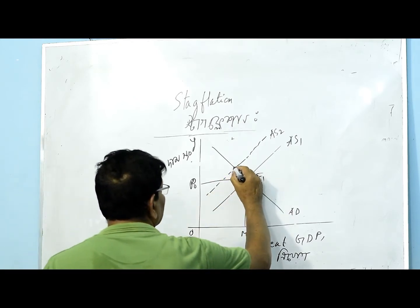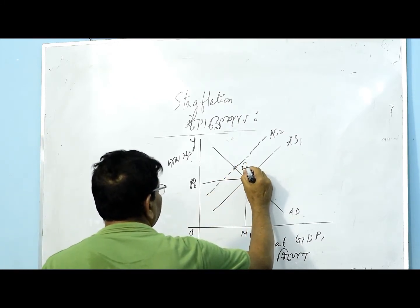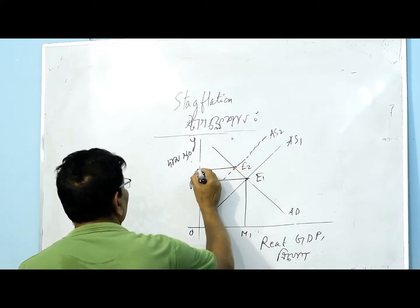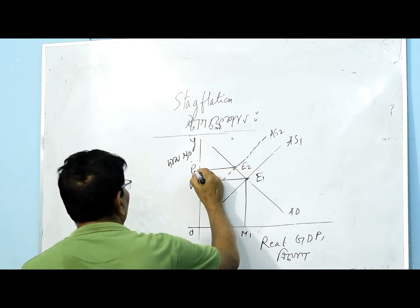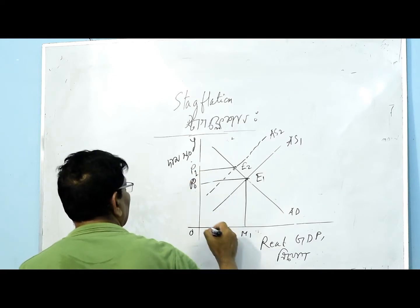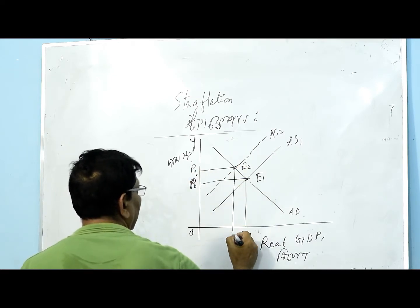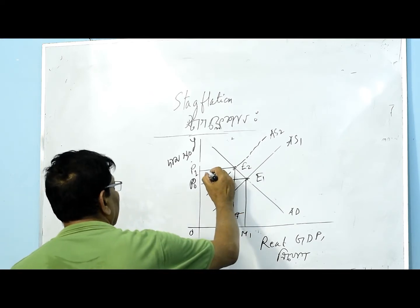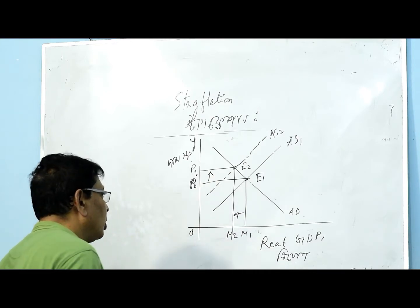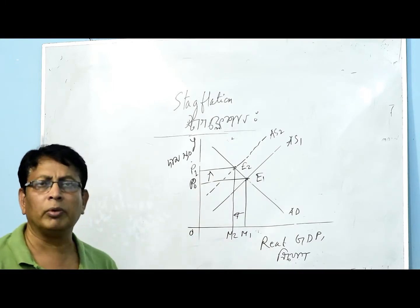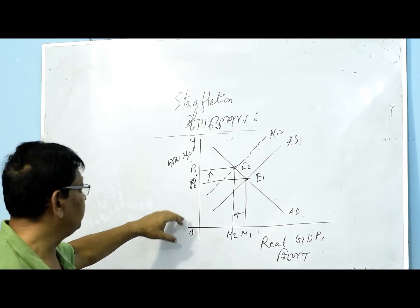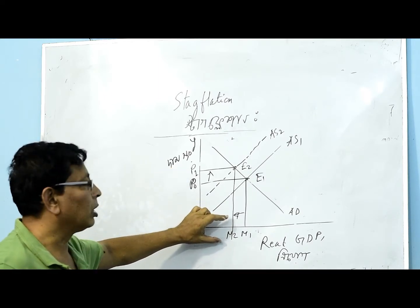Here we have the new equilibrium E2. The second equilibrium point is at P1, the new price level P1, with M2 as the new output level. The new price level P1 is higher than before.